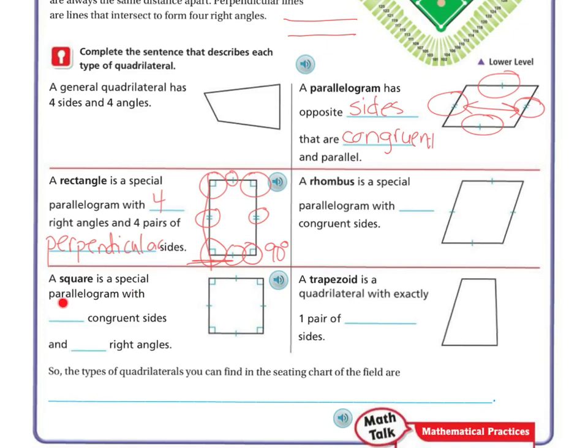Now, a square is a special parallelogram with four congruent sides. See, these ones are all congruent. This one, it just had two congruent sides on that side and two congruent sides on this one. But this one, all four are congruent and it has four right angles. So there's my four right angles. Remember, right angles are 90 degrees.